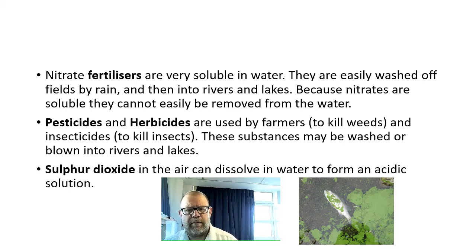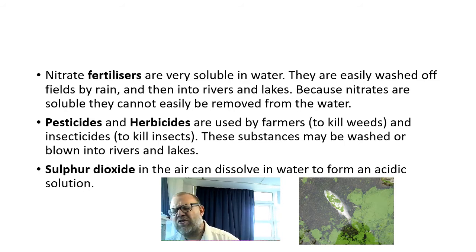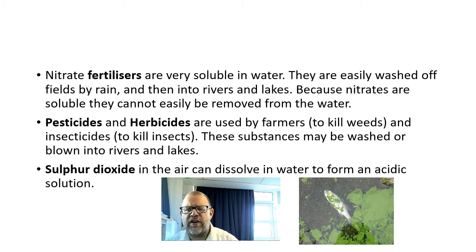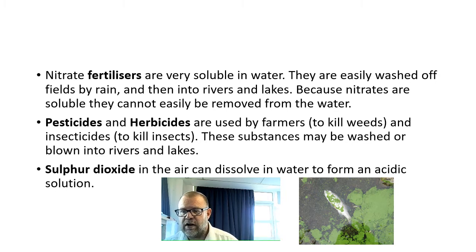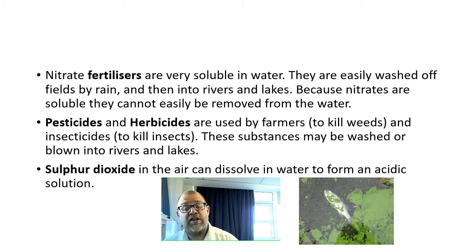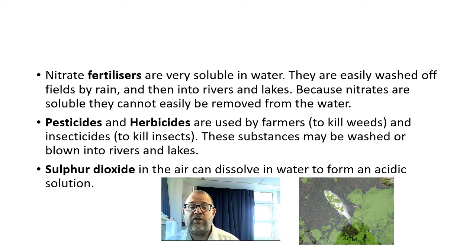It's like dissolved sugar in a cup of tea — it's there, and you'd have to evaporate all the water to remove it. You can't do that with a river. Pesticides and herbicides are important to kill weeds and insects, but there must be alternatives. These substances may be washed or blown into rivers and lakes, and they affect the food chain. One of the research questions is to look at DDT, a chemical that completely destroyed food chains within England, especially at the top trophic level.